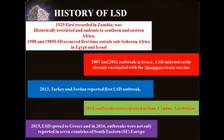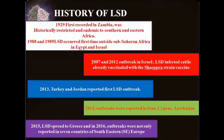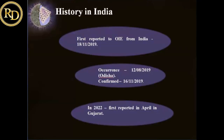In 2013, LSD outbreaks were reported in Turkey and Jordan. In 2014, it was reported in Iran, Cyprus, and Azerbaijan. In 2015, various countries of Greece and Southeastern Europe reported cases of LSD with huge morbidity rates. In India, LSD was first reported in 2019 and first reported to the OIE in 2019. This occurrence of disease was in Odisha. The confirmation took almost three months — symptoms were observed in August and confirmed in November 2019.